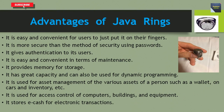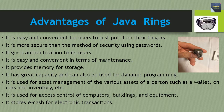The advantages of Java Rings: It is easy and convenient for users to just put it on their fingers. It is more secure than the method of security using passwords. It gives authentication to its users. It is easy and convenient in terms of maintenance. It provides memory for storage. It has great capacity and can also be used for dynamic programming. It is used for asset management of various assets such as wallet, cards, and inventory. It is used for access control of computers, buildings, and equipment. It stores e-cash for electronic transactions.